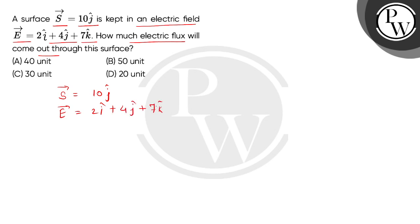We will note that i cap, j cap, and k cap are the unit vectors along the x-axis, y-axis, and z-axis respectively.